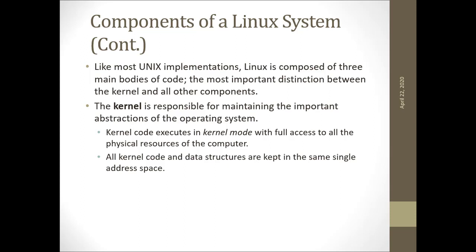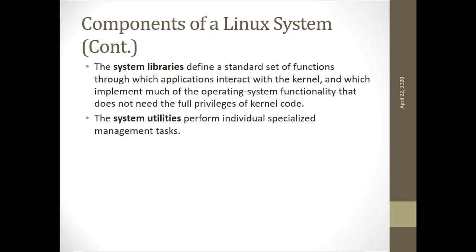Like most Unix implementations, Linux is composed of three main bodies of code. The kernel is responsible for maintaining the important abstractions of the operating system, and kernel code executes in kernel mode with full access to all the physical resources of the computer. All kernel code and data structures are kept in the same single address space. The system libraries define a standard set of functions through which applications interact with the kernel, and which implement much of the operating system functionality but do not need the full privileges of kernel code.